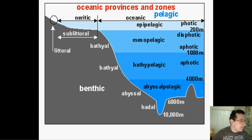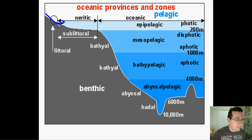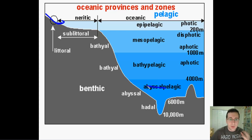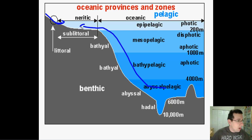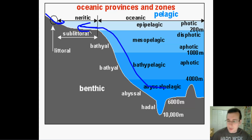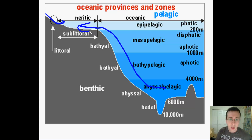The neritic zone is nutrient-rich because of the runoff coming off the continents. Also, whenever there is upwelling, it picks up decomposed material and nutrients from the hadal and abyssal zones and brings them up toward the sublittoral and neritic zones. So the neritic zone is the most nutrient-rich area of the oceans.